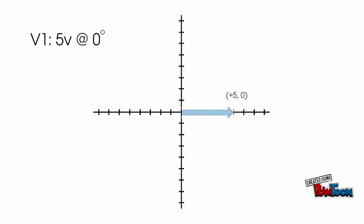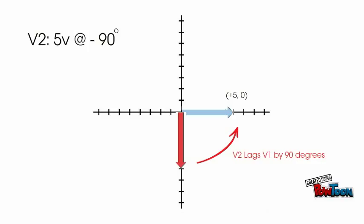Let's add a second vector that applies force in a different direction at the same time. Vector 2 is also 5 volts in magnitude and sits at positive 270 or negative 90 rotational degrees with regard to vector 1. Vector 2 is said to lag vector 1 by 90 degrees. Vector 2's arrowhead sits at 0 comma negative 5.